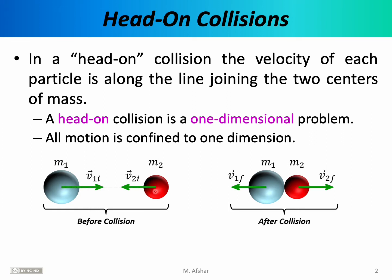You can call this line the x-axis or the y-axis, but whatever you call it, you're guaranteed that even after the collision, the particles will be moving along that axis — might be to the left, might be to the right, positive or negative, but all of the velocity vectors both before and after are guaranteed to be along that single line of motion.